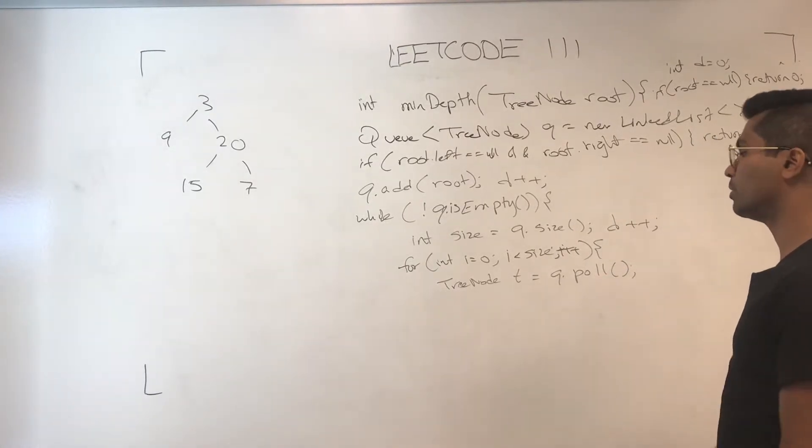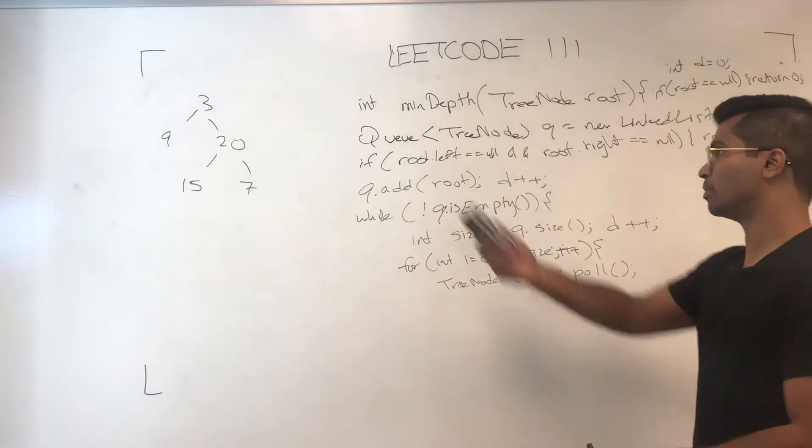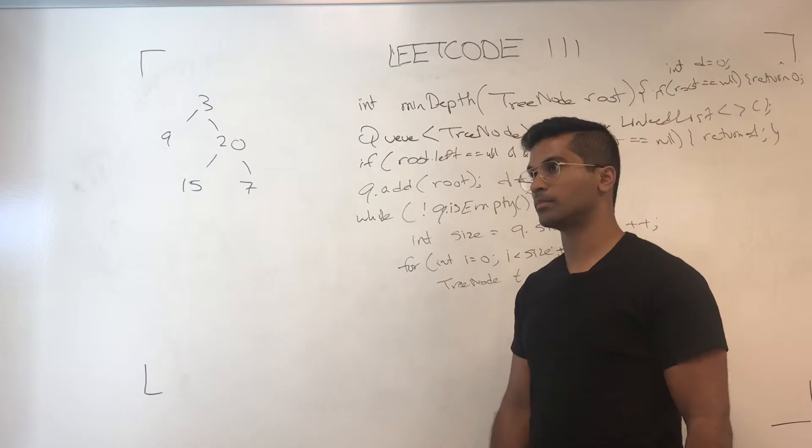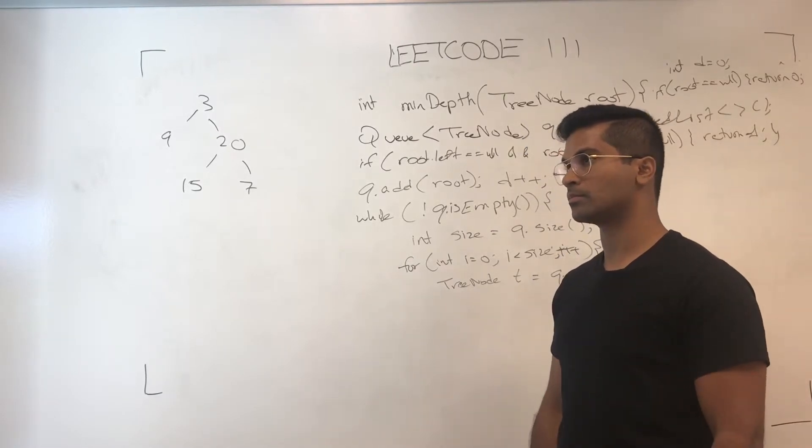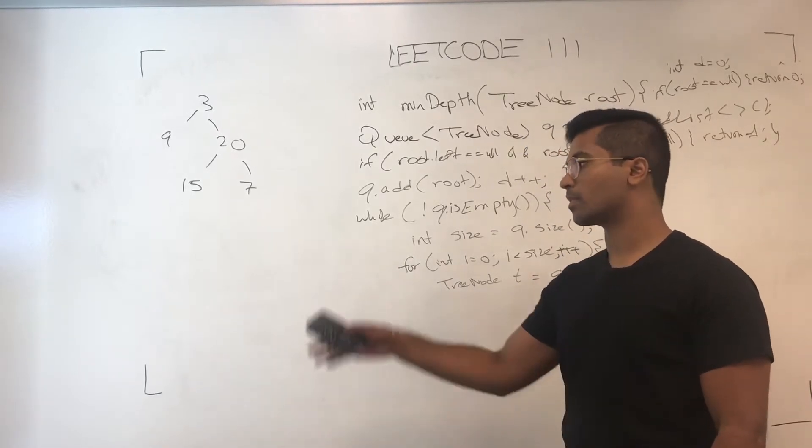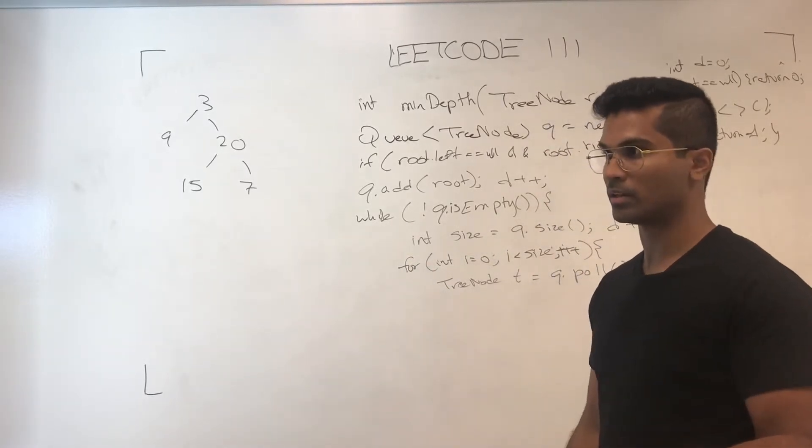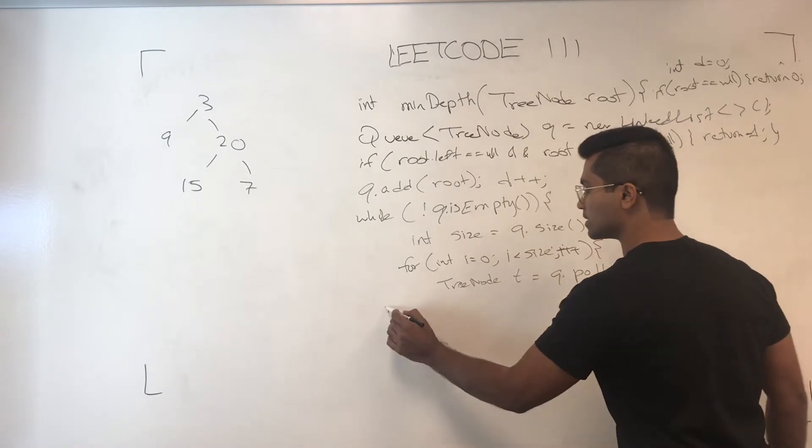Now that we pulled it, we pulled 3. What we do is check if the node that we just pulled, if its left and right is null. If it is, we return d, but in this case it's not.